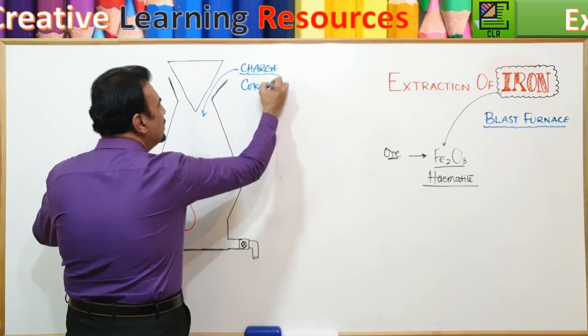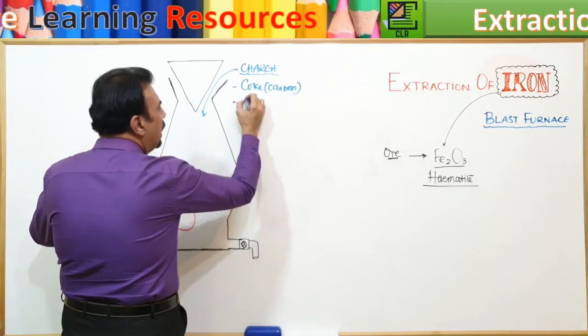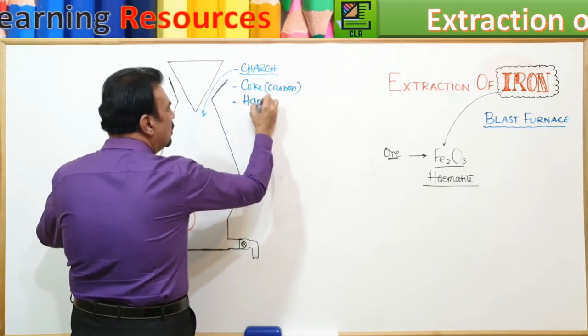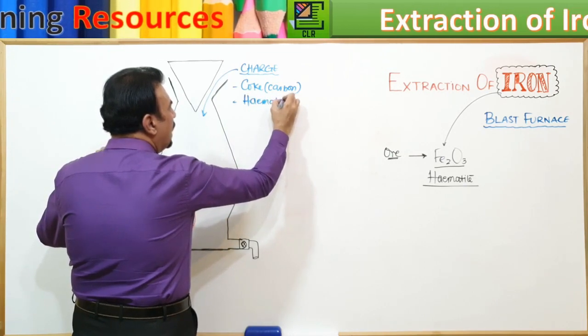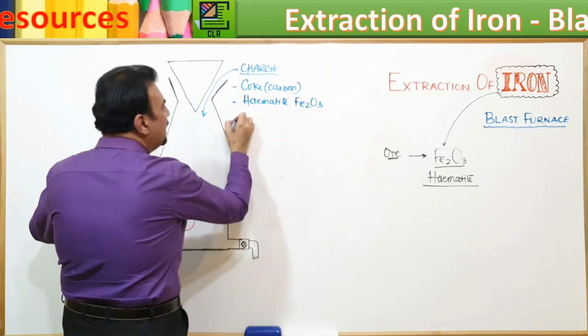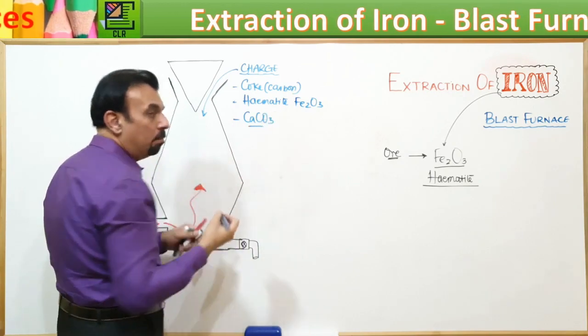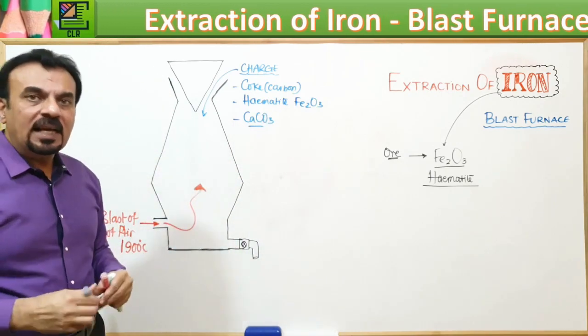And what are these three important things? One is coke, which is carbon. And the other one is hematite, which is the ore of iron, Fe2O3. And the third thing is calcium carbonate, marble. Why are we adding calcium carbonate? We're going to talk about that later.